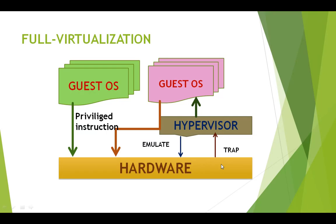The hardware sends trap instructions to the hypervisor, and the hypervisor emulates the hardware device, presenting the results to the respective guest operating system. This is how full virtualization provides independent communication between the guest operating system and the bare hardware device, operating essentially on a bare metal hypervisor with direct communication between the guest server and the hardware.